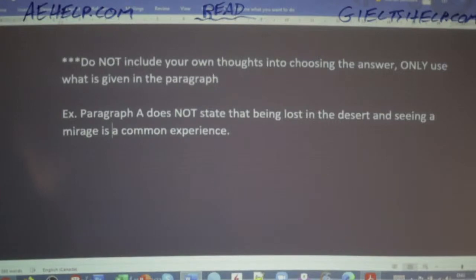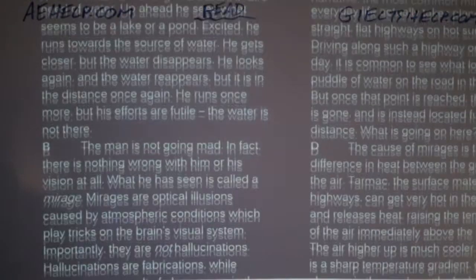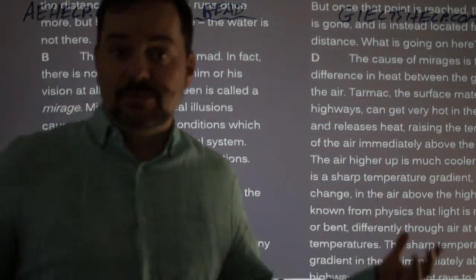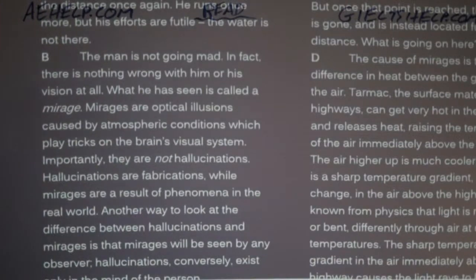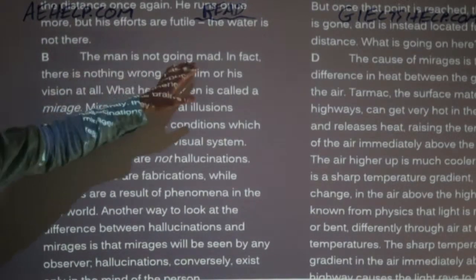The correct answer for paragraph A is number nine — IX — not five. 'An adventurer sees something.' A man lost in the desert is the adventurer, and seeing the mirage is seeing something. That's the paraphrase. IELTS examiners paraphrase, and so should you when matching headings to paragraphs.